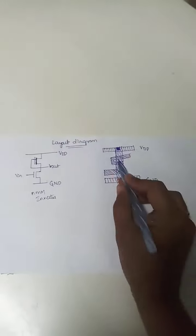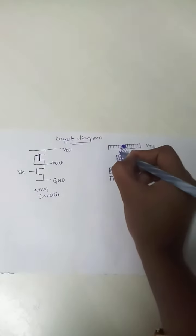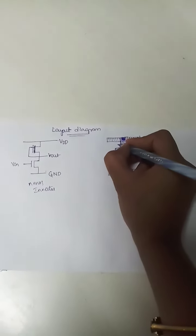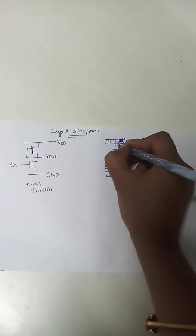And now, here, this is depletion mode transistor. You have to implement an implant over here. Similar way, square box. Just make a dotted line.